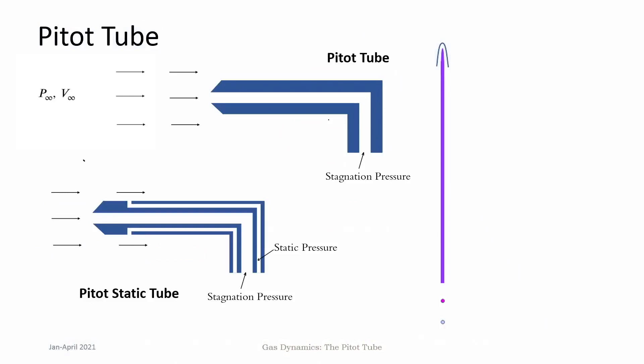In this lecture we will look at a particular application of the stagnation flows or stagnation properties that we saw in the previous class, which is flow measurement of compressible flows — specifically the pitot tube. The pitot tube is a flow measurement technique; it is a simple hollow tube into which flow enters at a particular point, stagnates within the tube, and the pressure is measured using any pressure measurement system. A pitot tube actually measures the stagnation pressure of the flow.